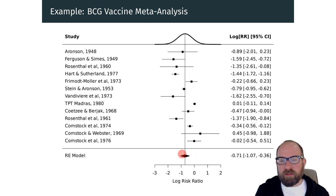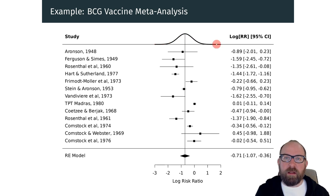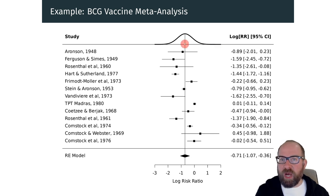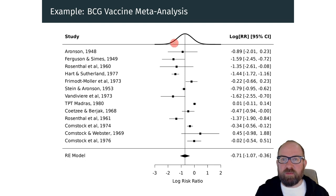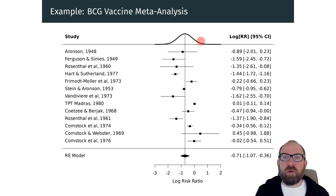But there is a fair amount of heterogeneity in these results, which we can see up top. This is the estimated distribution of the true effects, based on mu hat the average effect and tau squared representing heterogeneity. So there might be circumstances where the vaccine is even more effective, or where it is possibly not even effective at all.